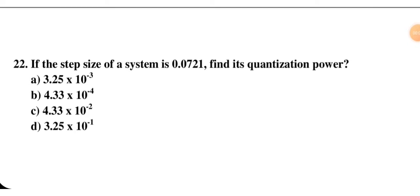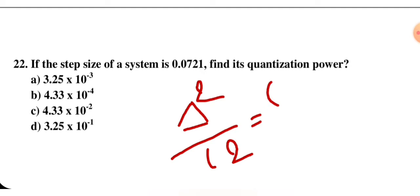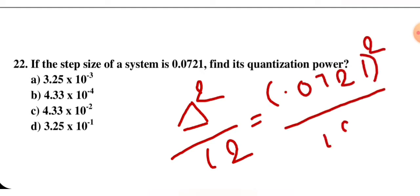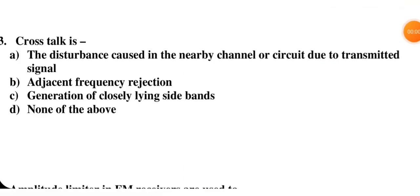Step size of a system is 0.0721. Find its quantization power. The formula for quantization power is: step size squared divided by 12. So the calculation is (0.0721)² / 12. Please solve and cross-check this answer with the given options.